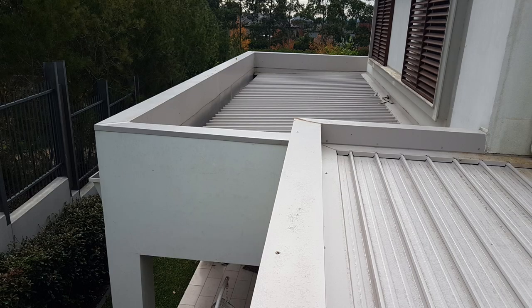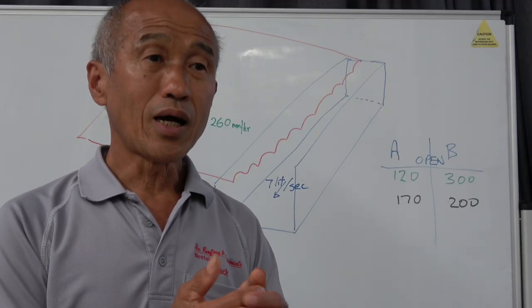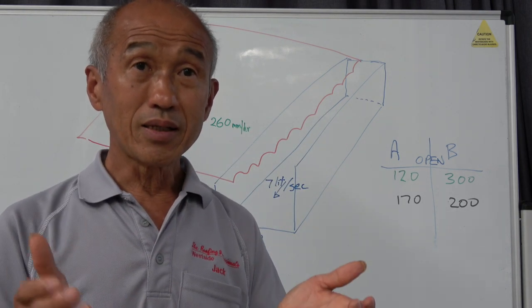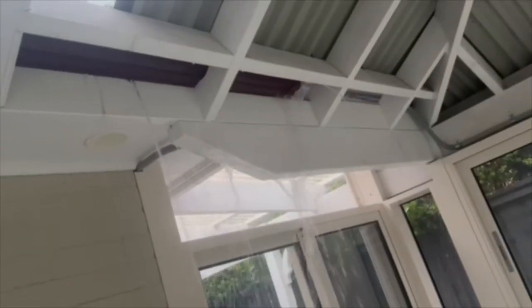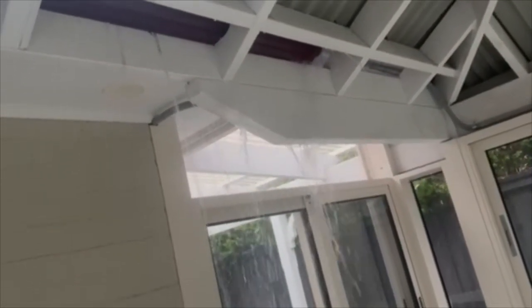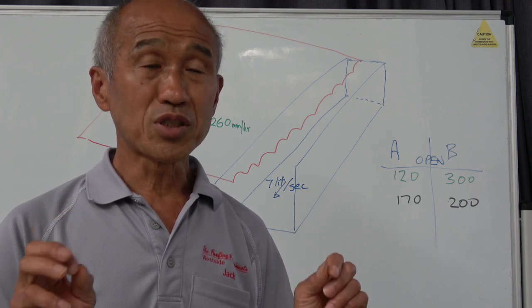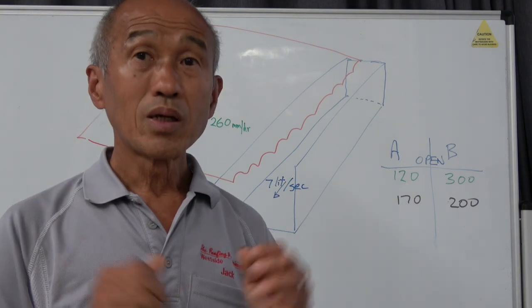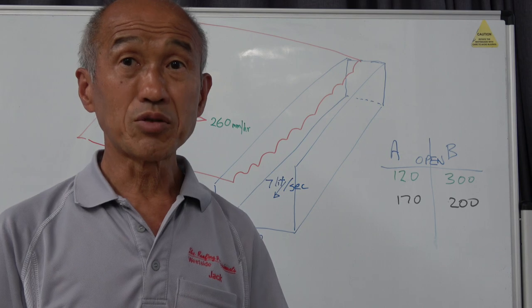Box gutters can be really problematic simply because they are holding water within the confines, within the perimeter of the house, and if there's any blockage anywhere, you know, overflow and all the water goes inside the house and causes a lot of damage. So because of this problem the designers of box gutters have to comply with fairly strict code, and the code has been written to prevent overflows in box gutter situations.